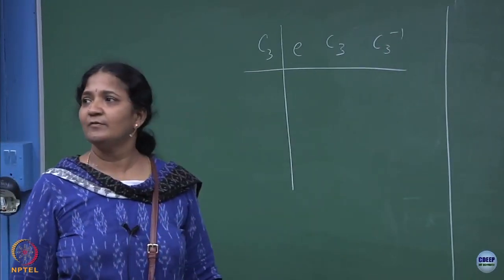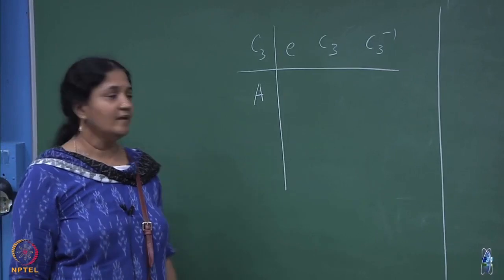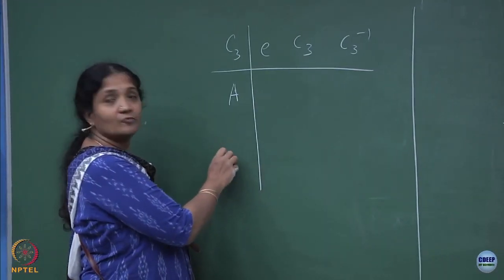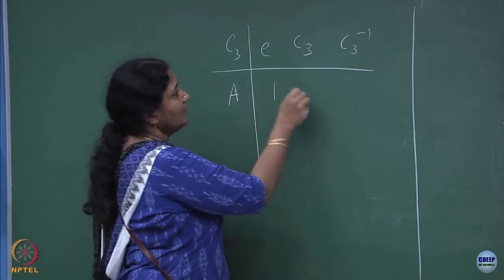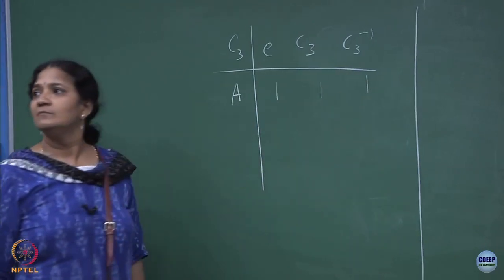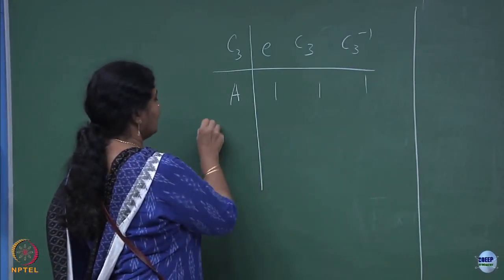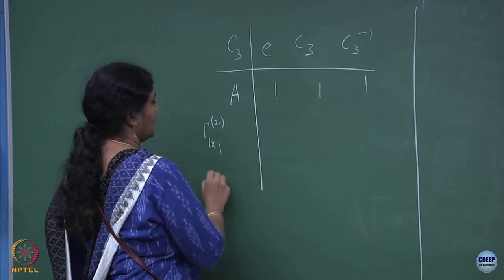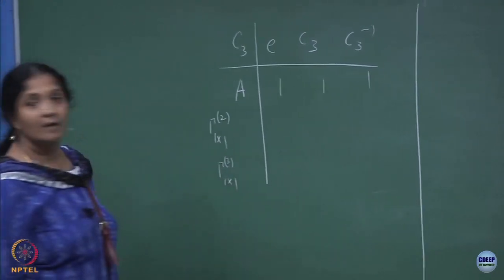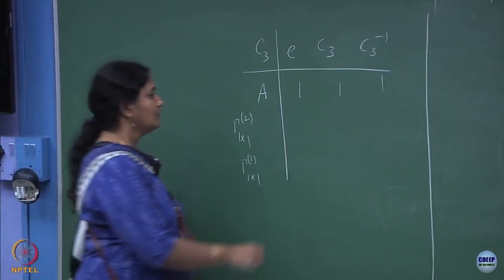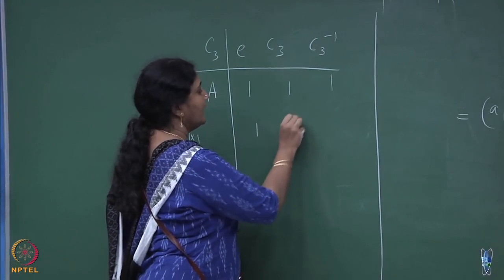For C3, each element is a class by itself. You will have 1D representations — the trivial representation and non-trivial representations which should also be 1×1 matrices. One of the irreps has characters 1, 1, 1. For the next 1×1 matrix, we can have a character of e^(2πi/3). We will write the Mulliken symbols afterwards.